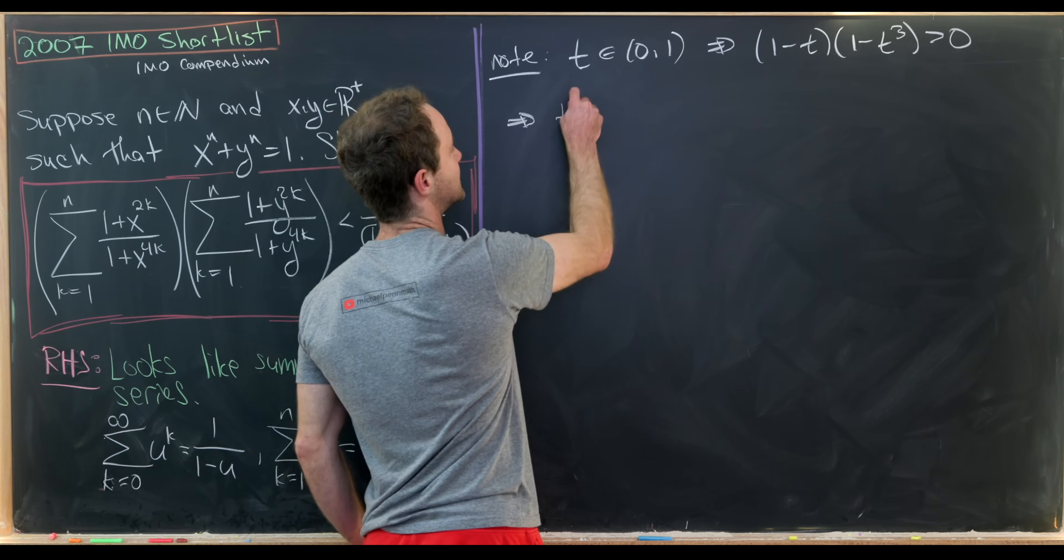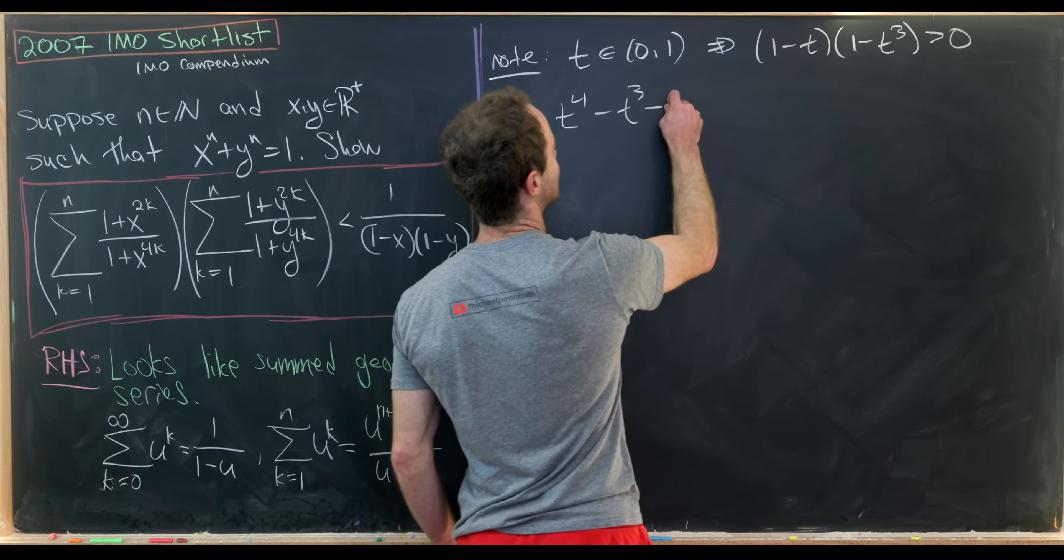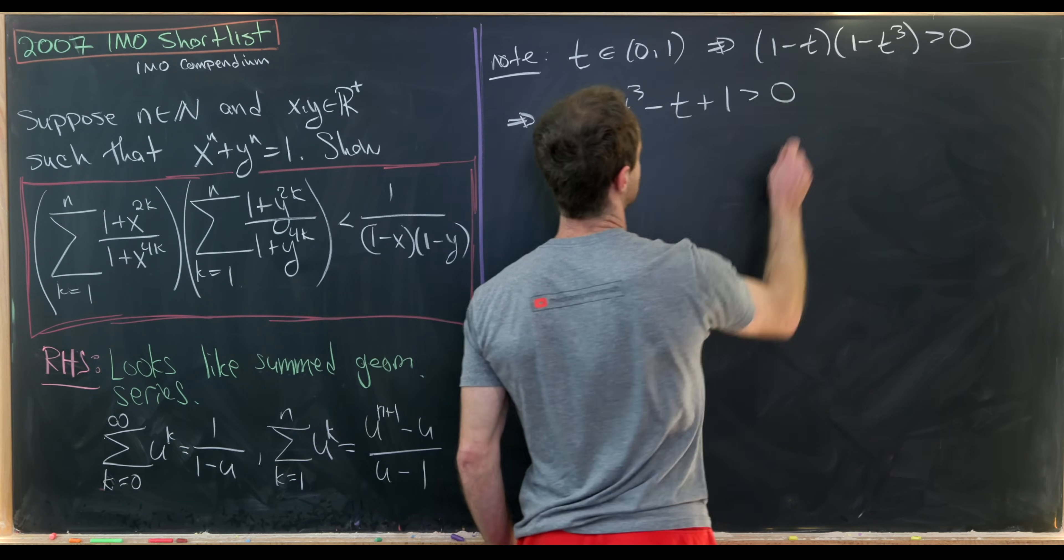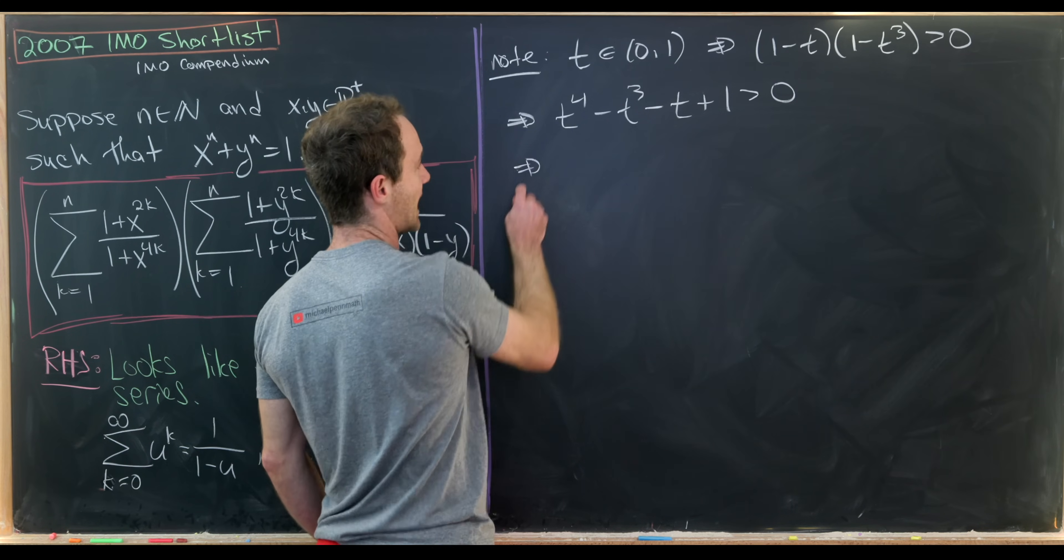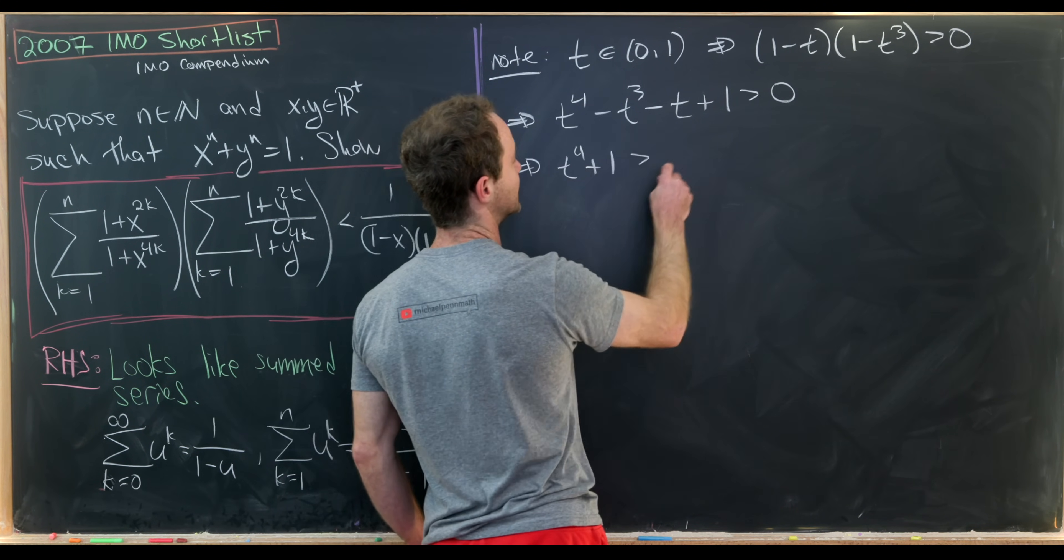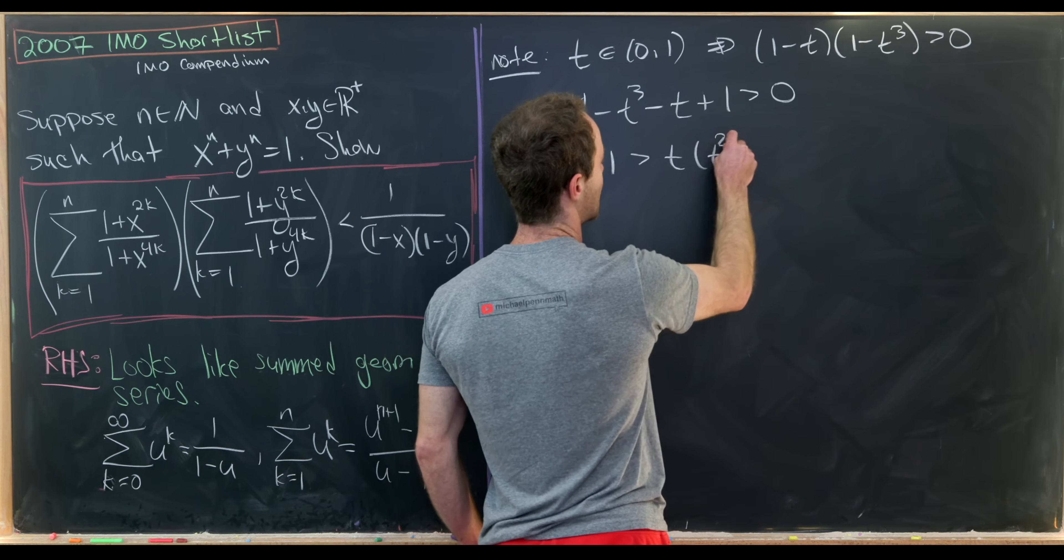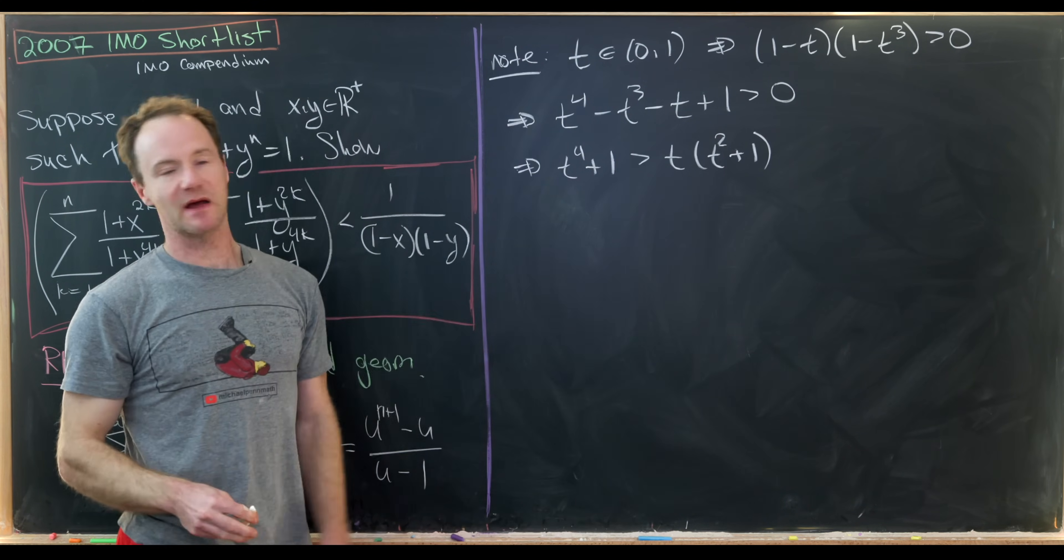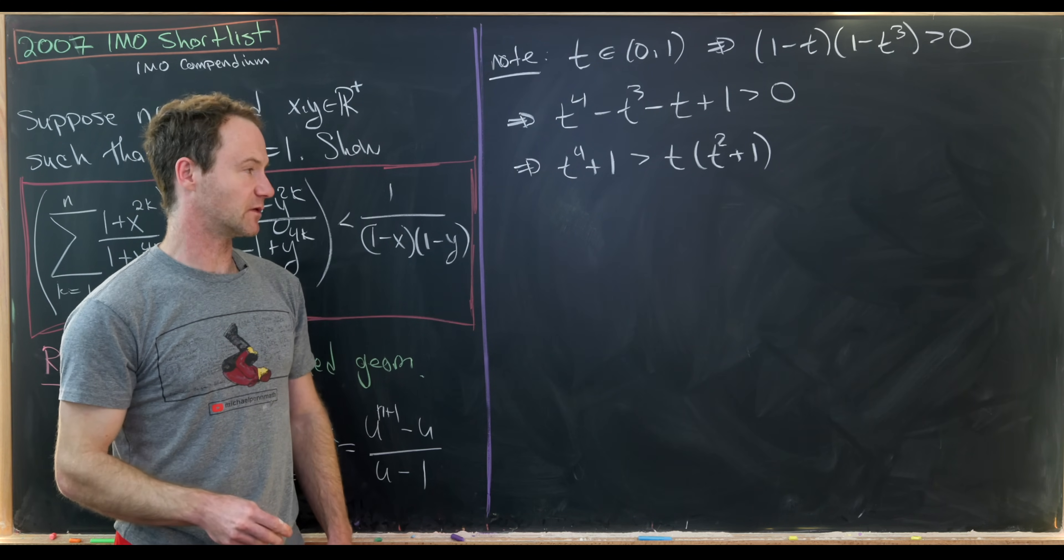So this means that t to the 4th minus t cubed minus t plus 1 is bigger than 0. And from that, we can see that t to the 4th plus 1 is bigger than t times t squared plus 1, just by moving some things to the other side of the equation. But then by moving some things around,